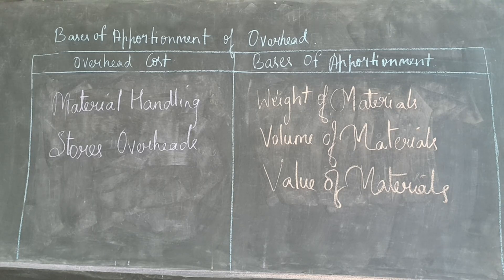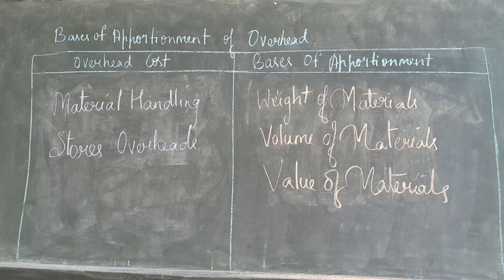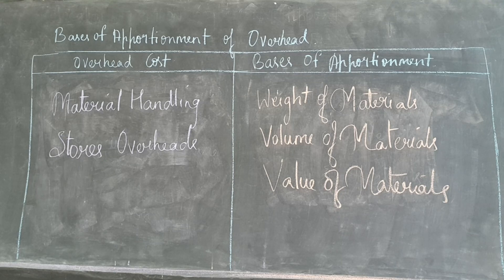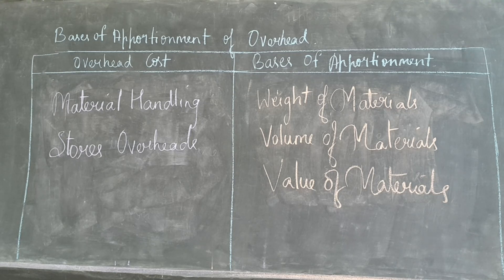According to the situation, we should choose the appropriate apportionment basis. This is all about the theory part of this chapter. From our next video, we will be starting with solving the problems which might come in your examinations for this particular chapter. Hope you have understood the theory part very well. If you have any doubt, please put it in the comment box so that we will clarify your doubt as soon as possible. Thank you.